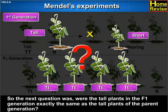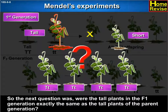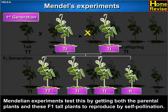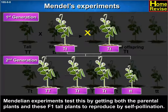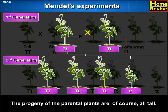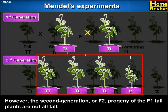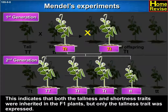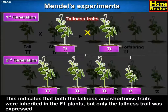So, the next question was: were the tall plants in the F1 generation exactly the same as the tall plants of the parent generation? Mendel tested this by getting both the parental plants and the F1 tall plants to reproduce by self-pollination. The progeny of the parental plants are, of course, all tall. However, the second generation, or F2 progeny, of the F1 tall plants are not all tall — instead, one quarter of them are short. This indicates that both the tallness and shortness traits are inherited in the F1 plants, but only the tallness trait was expressed.